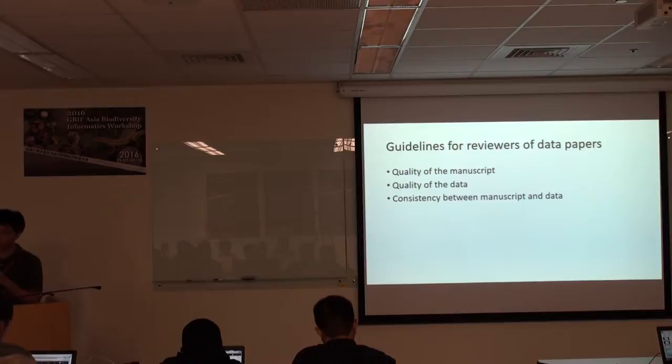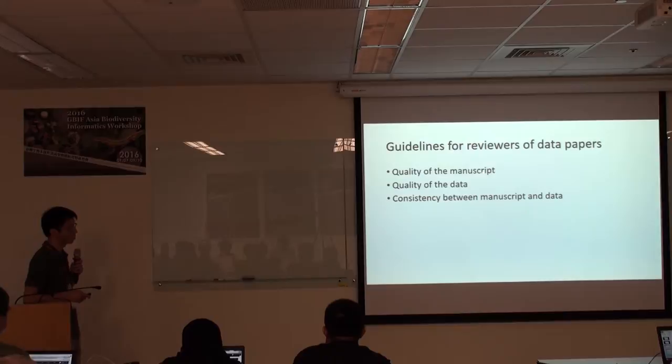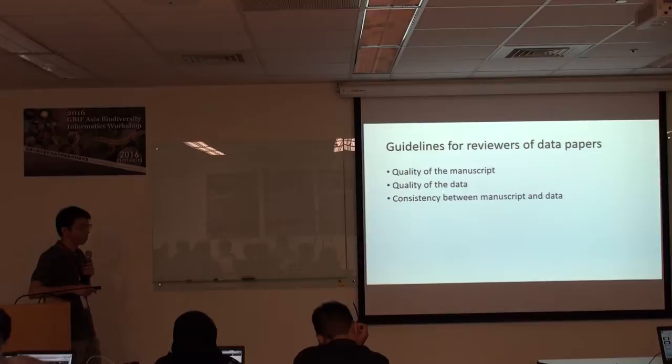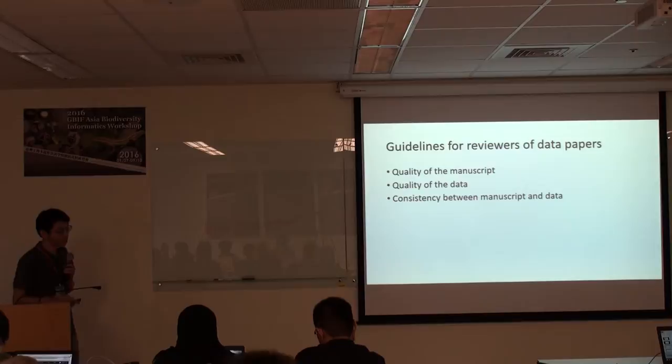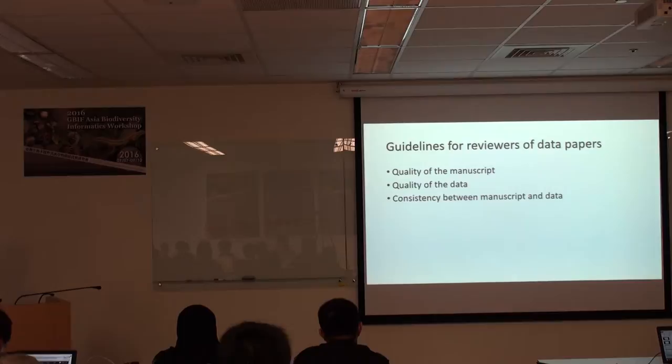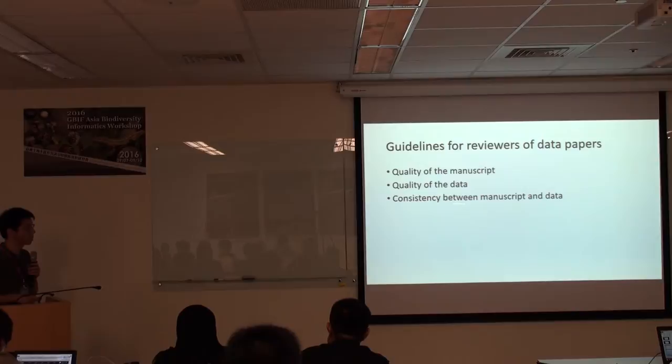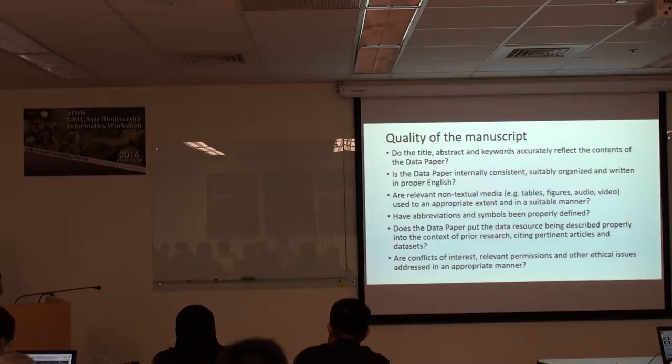Of course, data quality is also very important. If there are a lot of errors and no detailed information on the measurements, the data quality should be improved — maybe even rejected. And equally important is the consistency between the manuscript and the data. These are the three main points for reviewers when reviewing a data paper: manuscript quality, data quality, and consistency between manuscript and data.